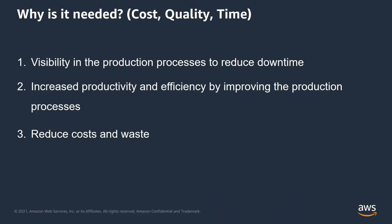Why is Andon even needed? It helps with the three constraints of a process: cost, quality, and time. Number one, it helps reduce downtime of the production process. Number two, it helps bring down defects in the product by preventing defects from propagating further down an assembly line. The third point is that since the above two are baked into the process, it reduces cost and waste in the production system.